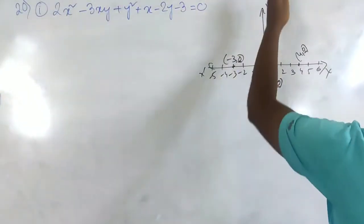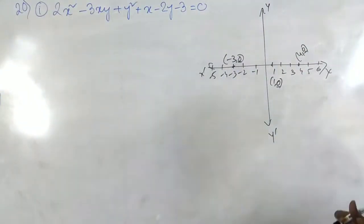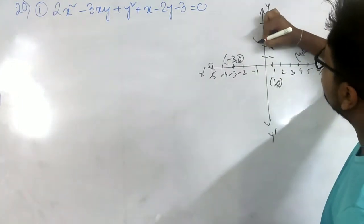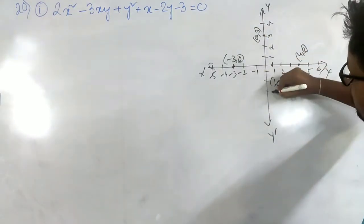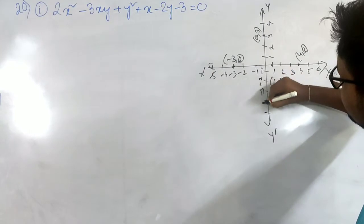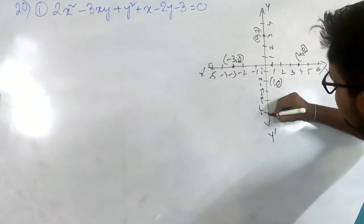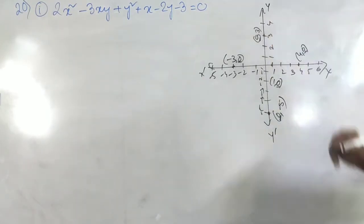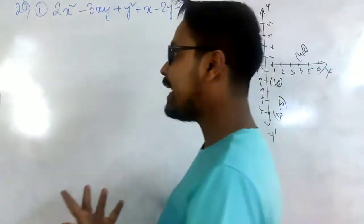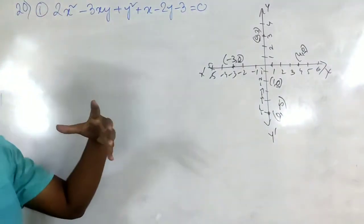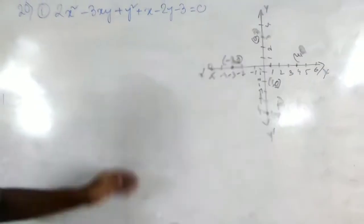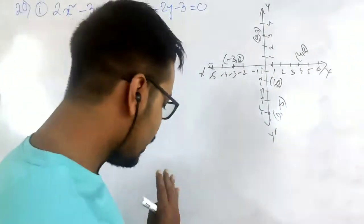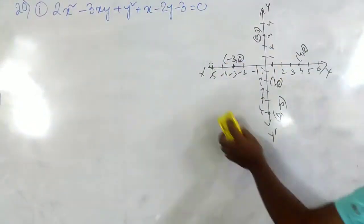Similarly, on the y-axis, the x-coordinate is always 0. For example, a point at 3 on the y-axis is (0, 3), and a point at -5 would be (0, -5). So, the point at which the curve cuts the x-axis will have y-coordinate as 0, and the point at which the curve cuts the y-axis will have x-coordinate as 0.